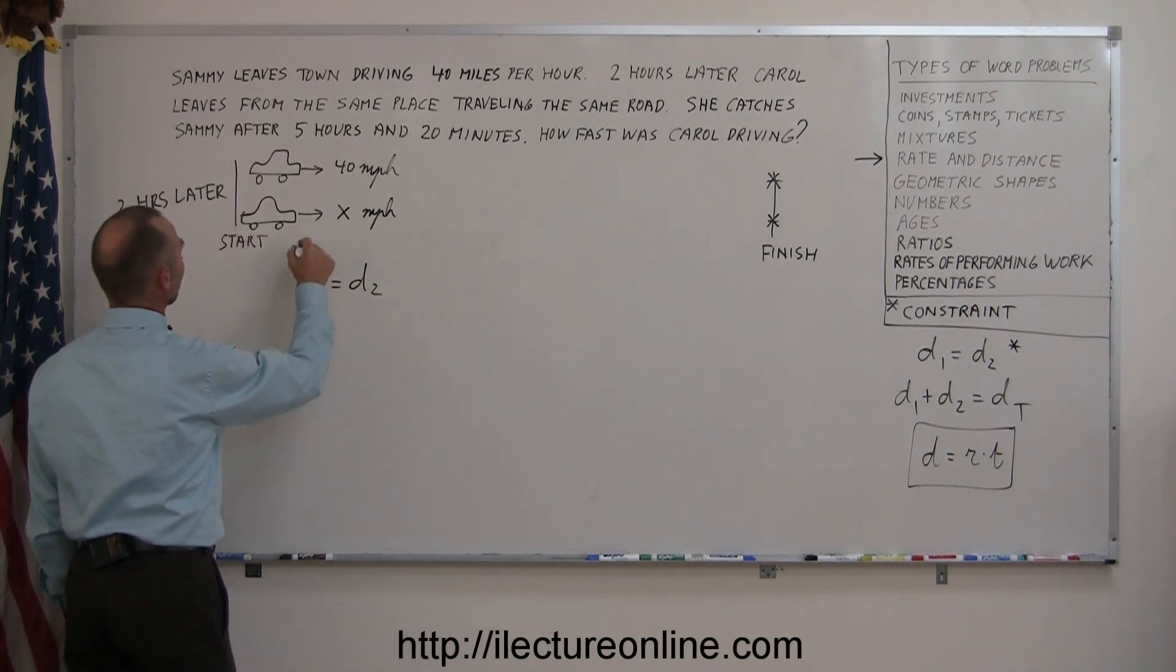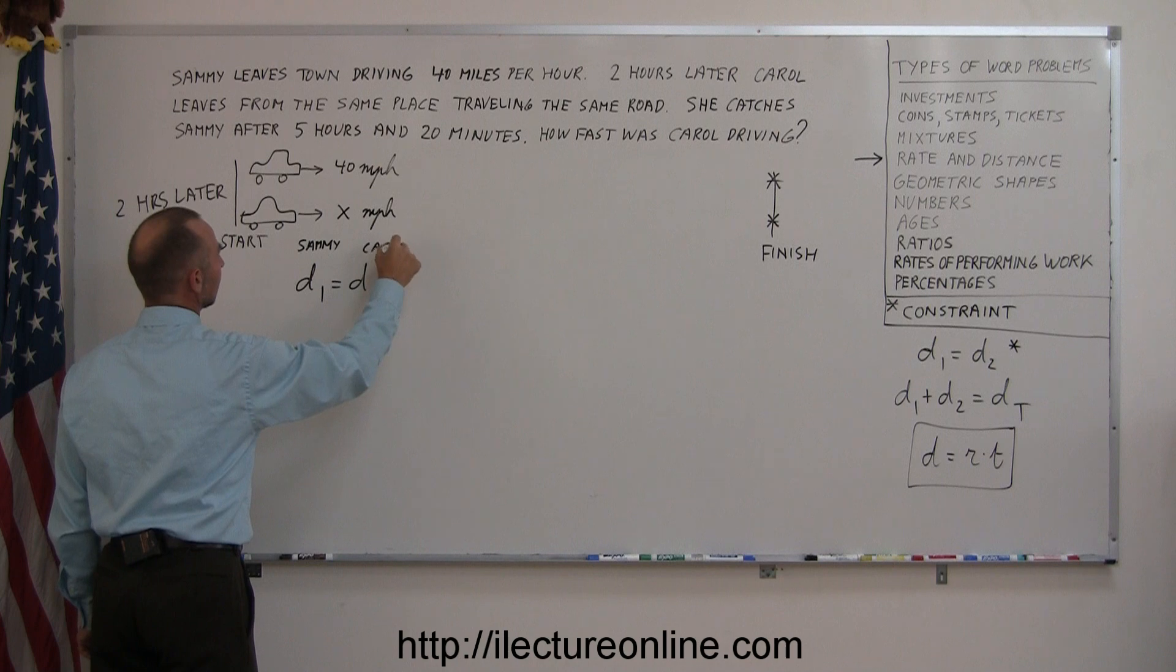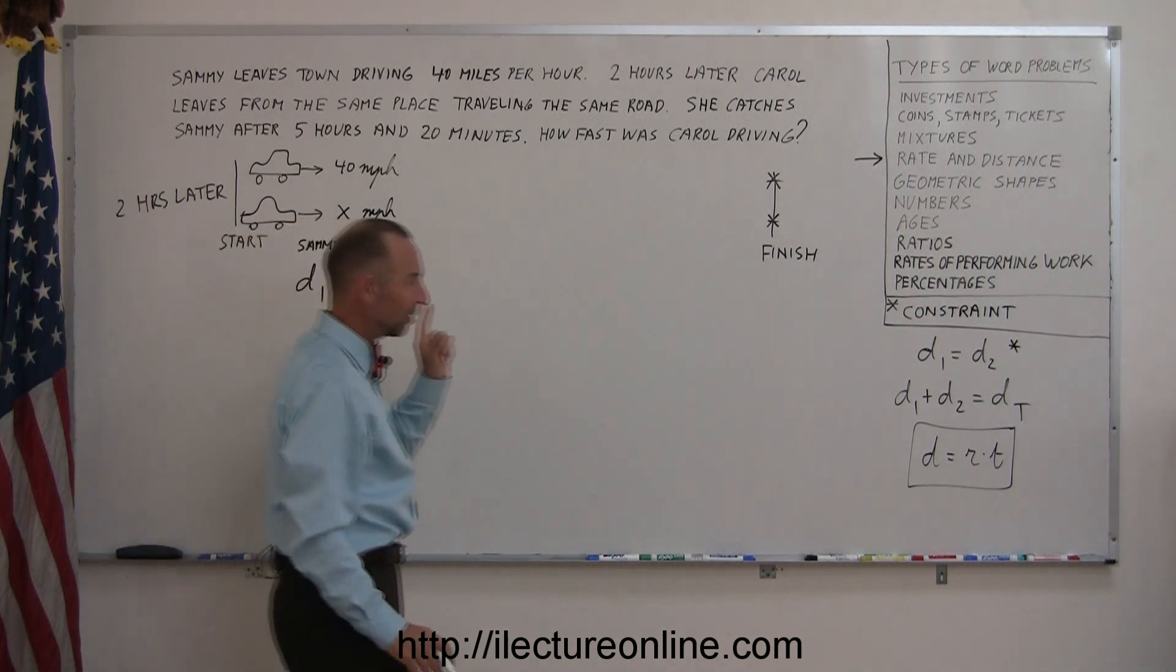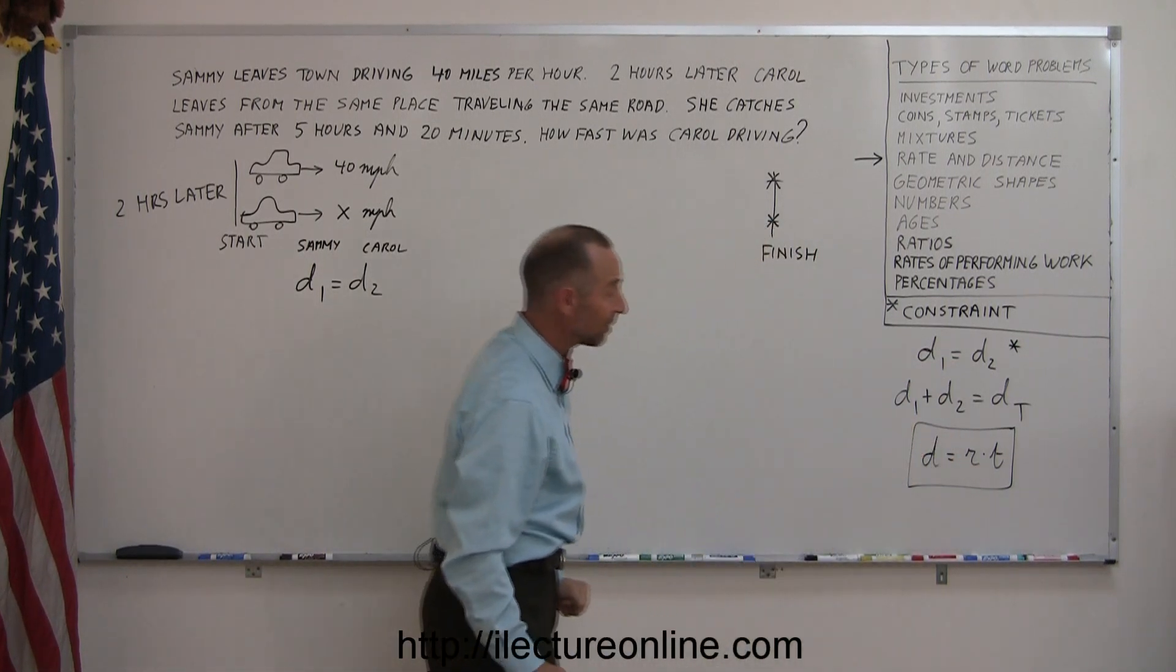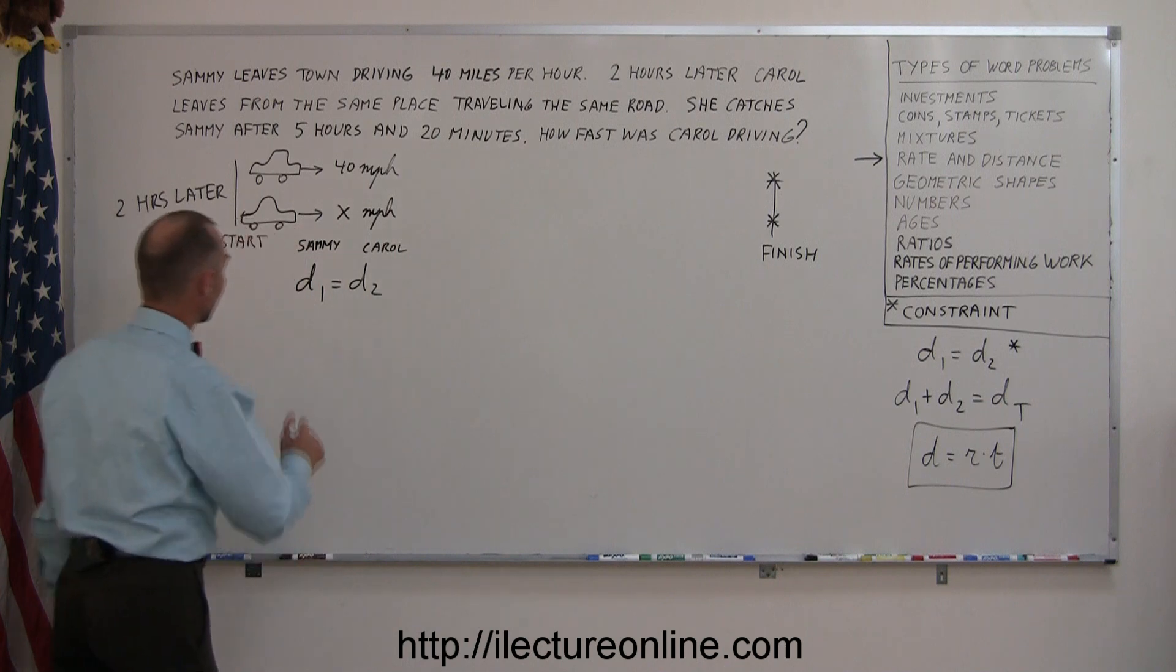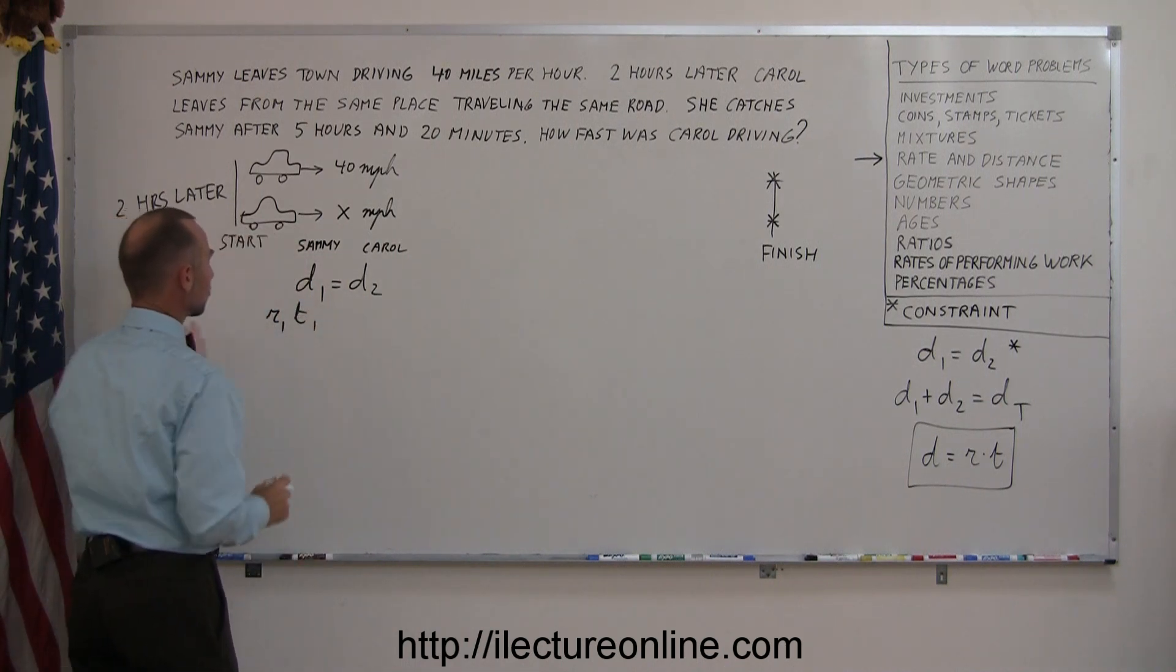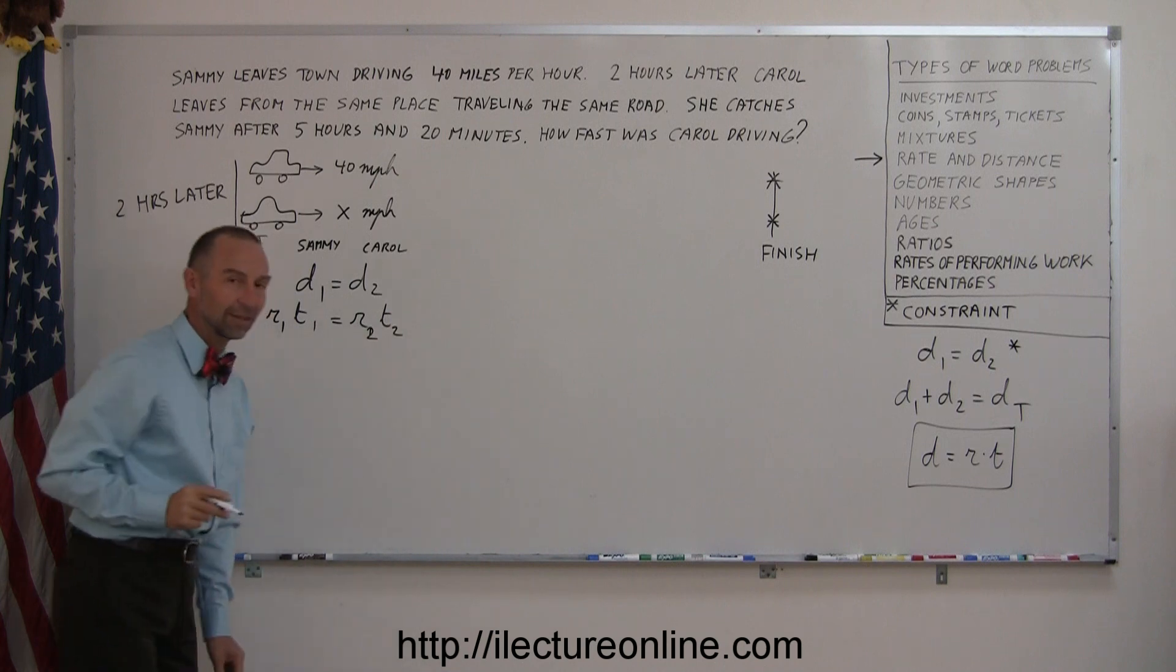So distance 1, let's say that's for Sammy. And distance 2 is for Carol. And since they travel the same distance, you can say distance 1 equals distance 2. Now, we're going to replace each distance by what they're equal to. Distance is defined by the rate times the time. So that means the rate of Sammy times the time that Sammy travels that distance equals the rate of Carol times the time that Carol travels that distance.